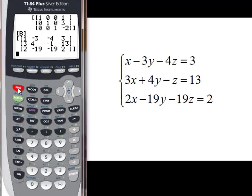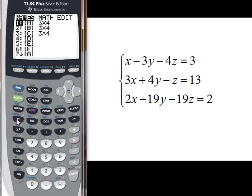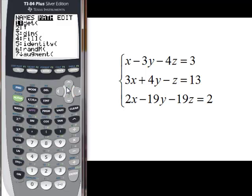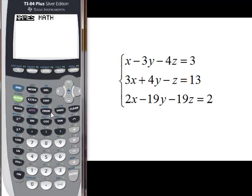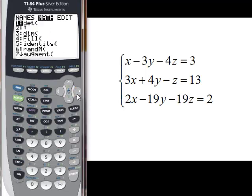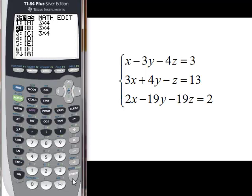I'm going to do the exact same thing, second matrix, and I'm going to do row reduced. I've got to go to math first. Then I'm going to do row reduced echelon form, and we're going to do it of matrix B this time. I'm going to get the row reduced echelon form of B.